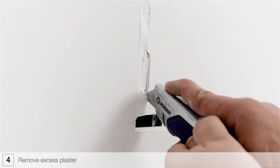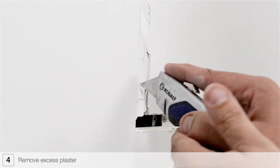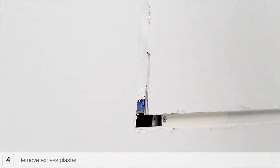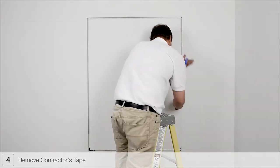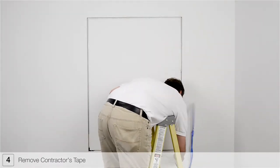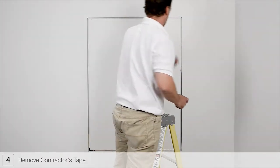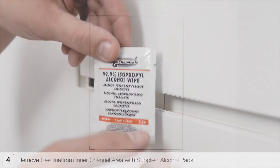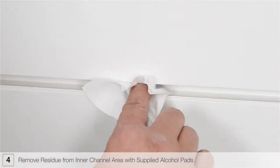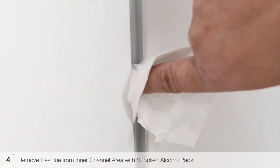Any plaster that covers the channel will need to be removed using a razor blade or other tool. Remove the contractor's tape from the channel. Once the excess plaster and contractor's tape is removed, a detailed sanding is required to smooth out rough edges along the channel. Use supplied alcohol pads to remove any residue from inner channel area.